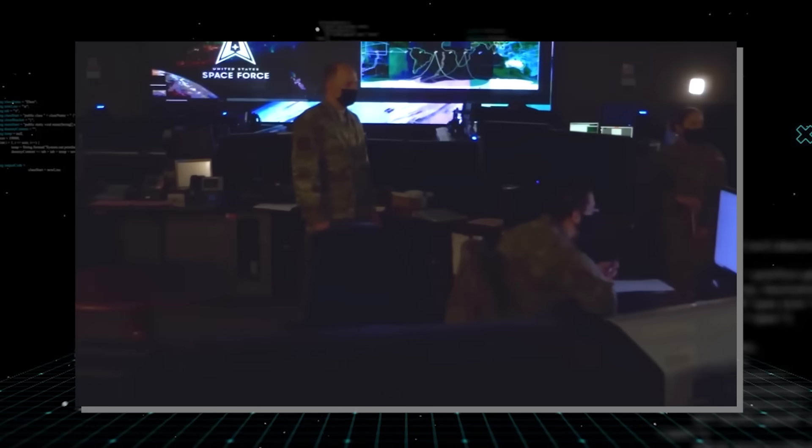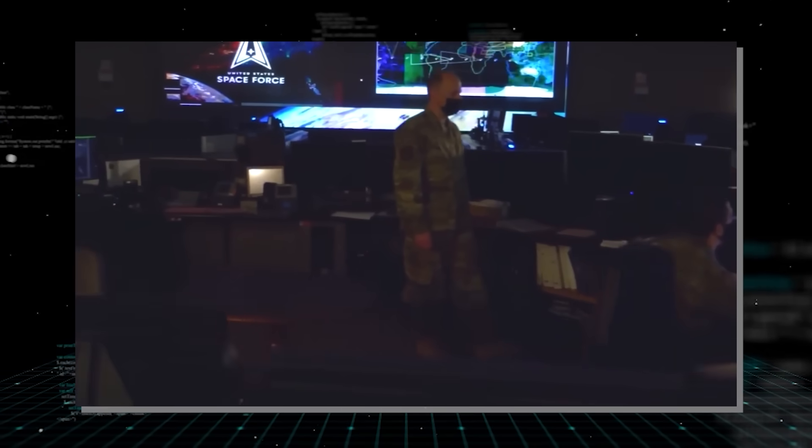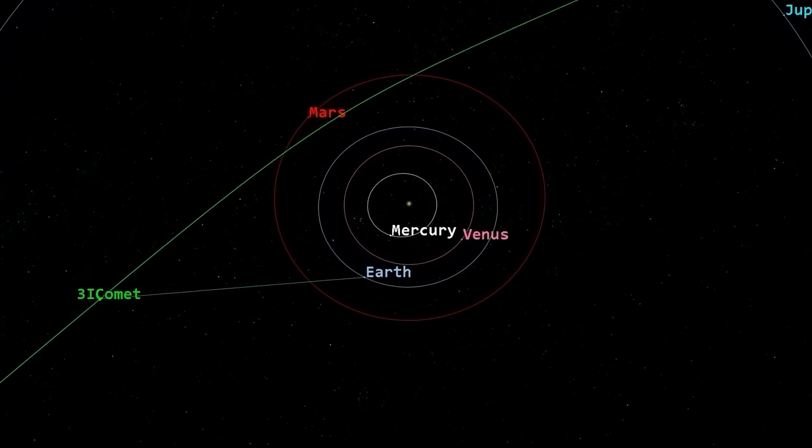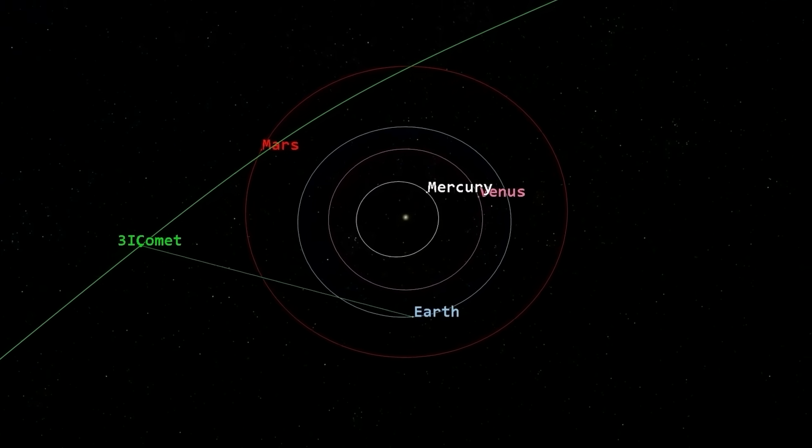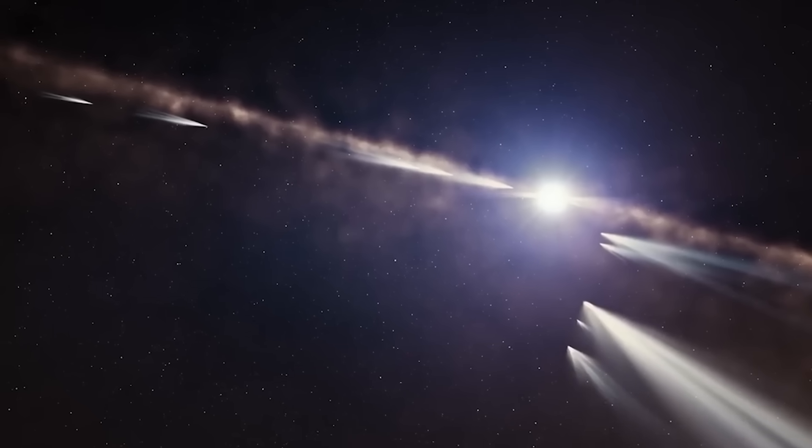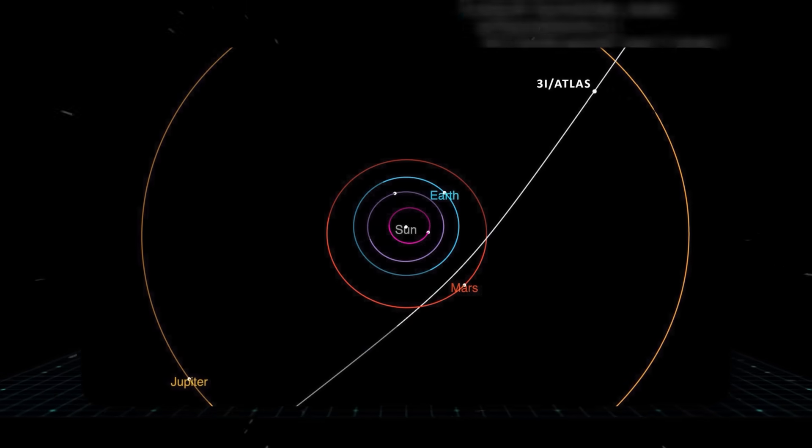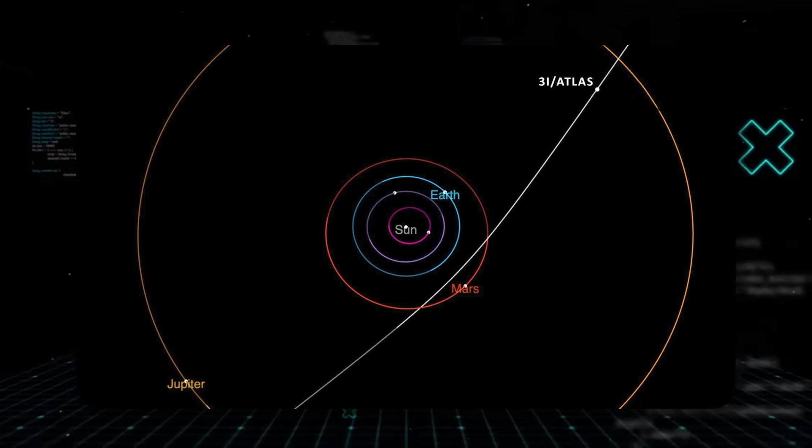This question has begun to haunt astronomers mapping its unusual path, and it's a wow factor that's hard to ignore. For a body supposedly arriving from interstellar space, you might expect a trajectory like a dart, plunging in, curving around the sun once and then departing forever. But that is simply not what the orbital charts show.